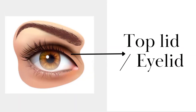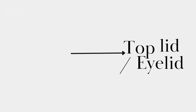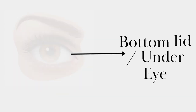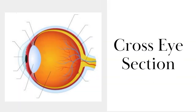Top lid or eyelid. Bottom lid or under eye. Now we are looking at cross eye section vocabulary.